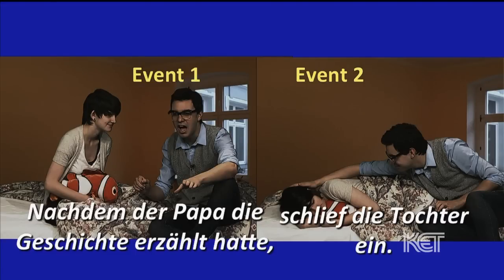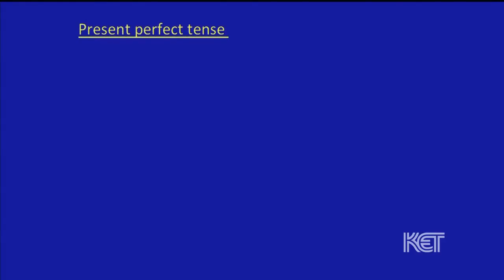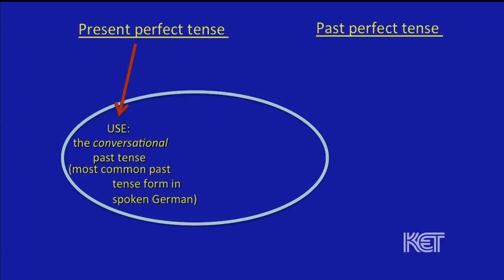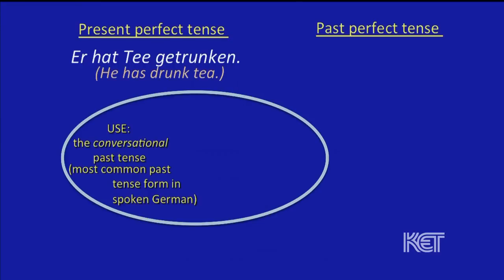When you say past perfect, we have to be careful not to mix it up with the perfect or present perfect. One is called just the perfect, or present perfect; the other is the past perfect. The present perfect tense is used for the conversational past — the most common past tense form in spoken German. For example, 'Er hat Tee getrunken' — 'He has drunk tea.' That's just the regular spoken past tense in German.